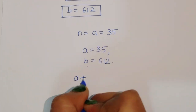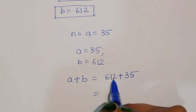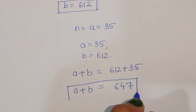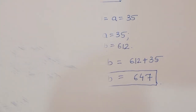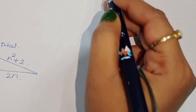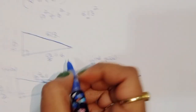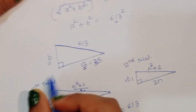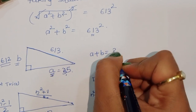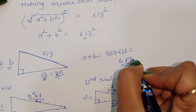So a equals 35 and b equals 612. We have to find the value of a plus b. Therefore a plus b equals 35 plus 612 equals 647. This is the solution. Thank you.